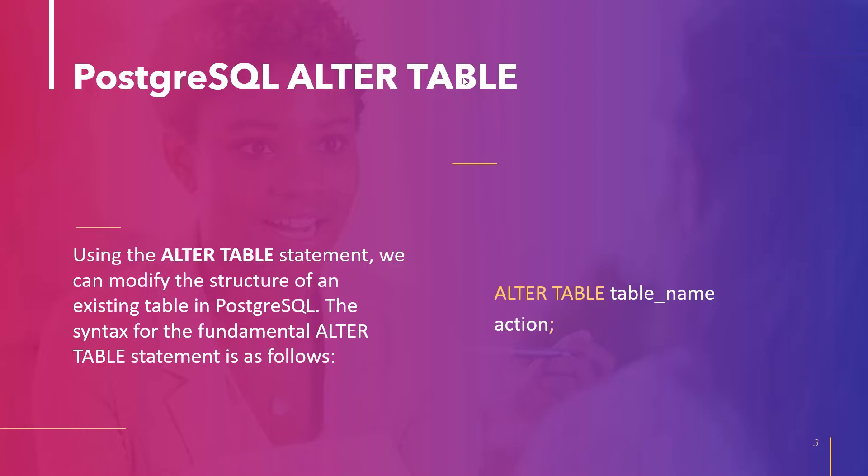The action can be any of the following: add a column, rename a column, change the data type of a column, set a default value for the column, drop a column, add a constraint to a column, and rename a table. Some of these actions we will cover in the upcoming topics.